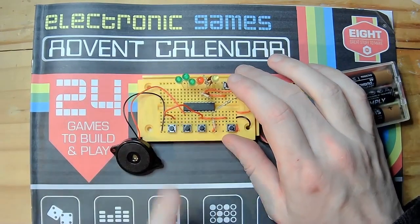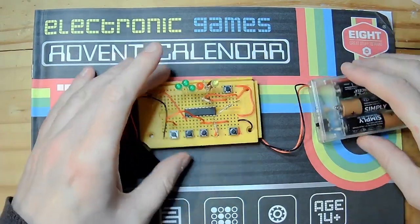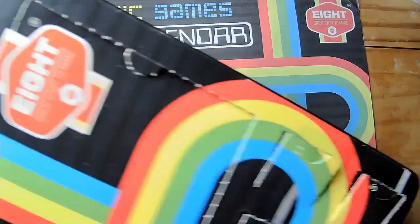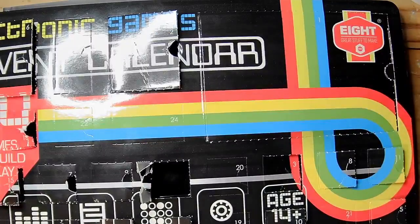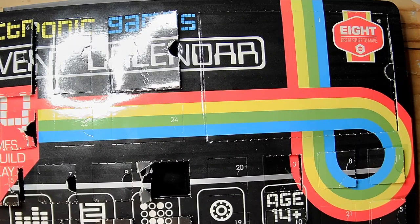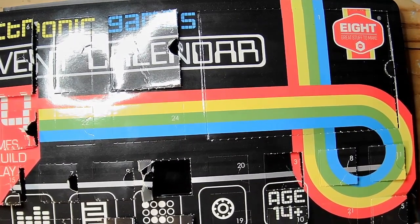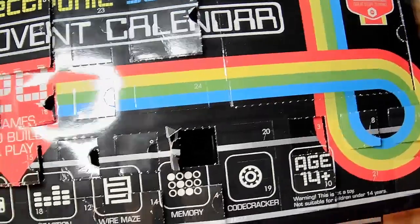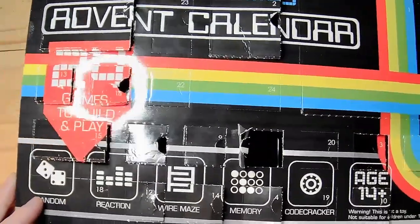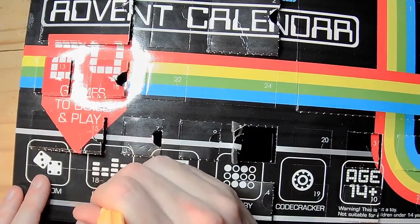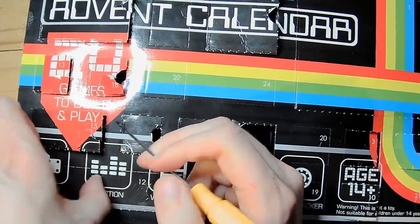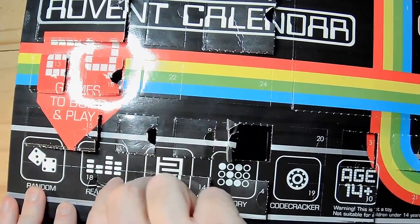Right, so that was yesterday, that was whack-a-mole, which is great actually. I really enjoyed that. So let's bring in day 18. Where are we? 19, 18. Oh, we're down here. You can see that we're down here in the corner. A sort of big door, day 18. It's a big door for 18.